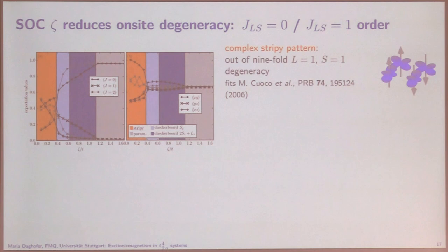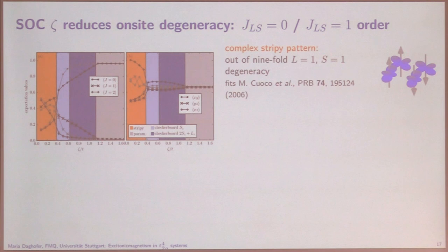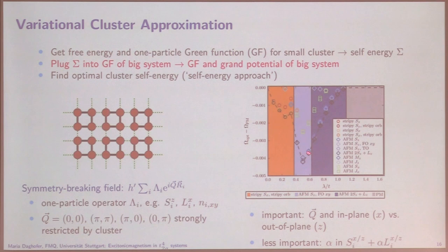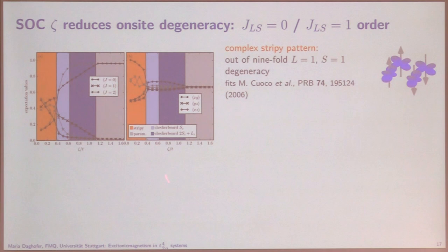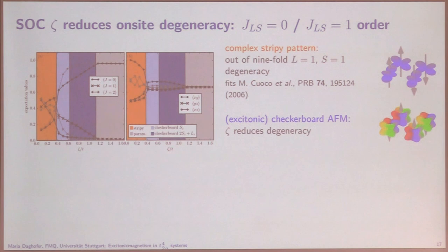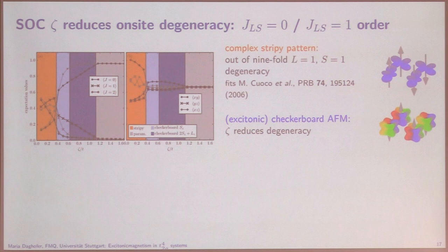Without crystal field splitting, for small spin-orbit coupling the orbitals become quite differently occupied — in stripy order one orbital is always empty and the others alternate. Then when spin-orbit coupling is strong enough, it kills this order and instead makes a checkerboard pattern. As spin-orbit coupling increases further, the singlet ground state suddenly becomes really important and dominates the paramagnet. The nice thing is when we go from the paramagnetic self-energy to the antiferromagnetic one, the J=0 singlet loses weight and the triplets gain weight. This is exactly what we expect for excitonic magnetism: it comes about because triplet excitations are mixed into the ground state.